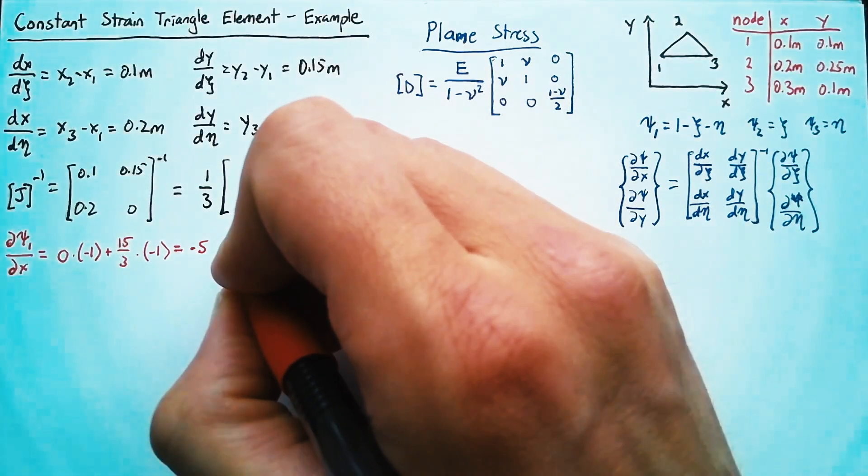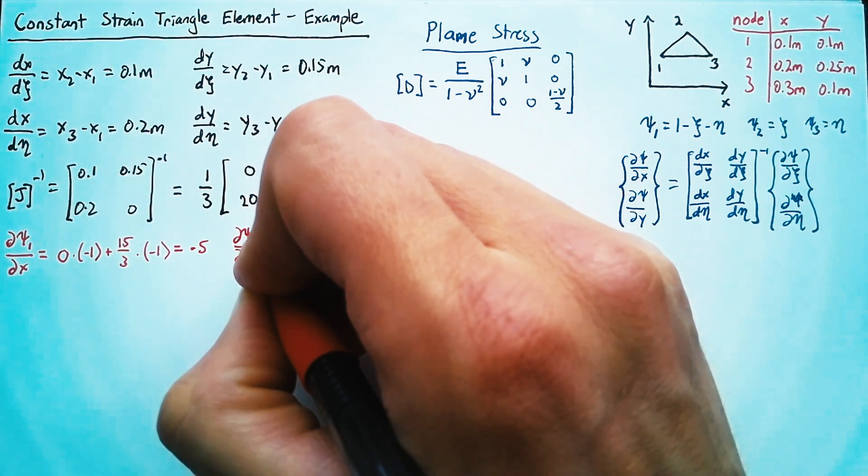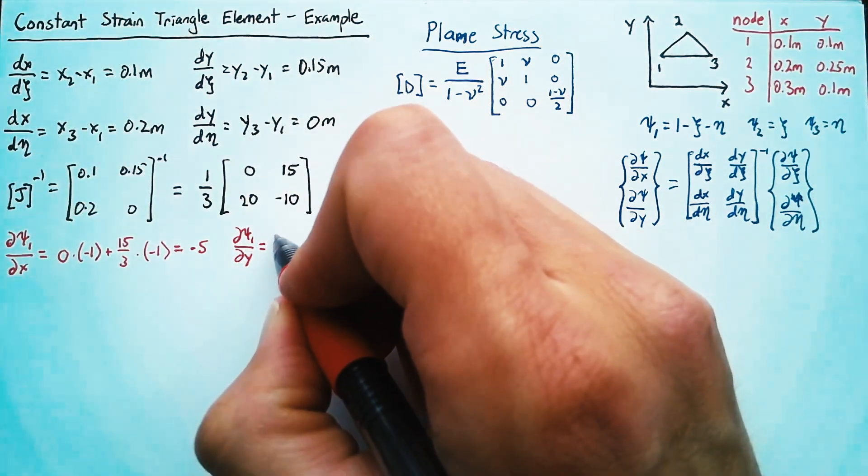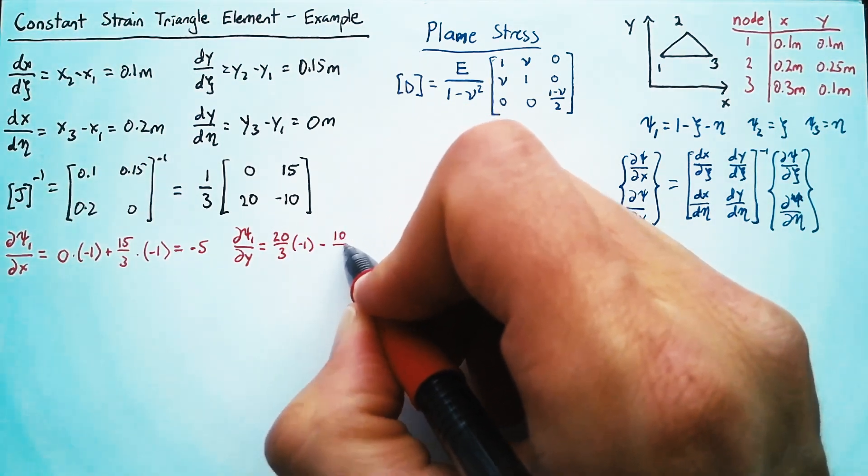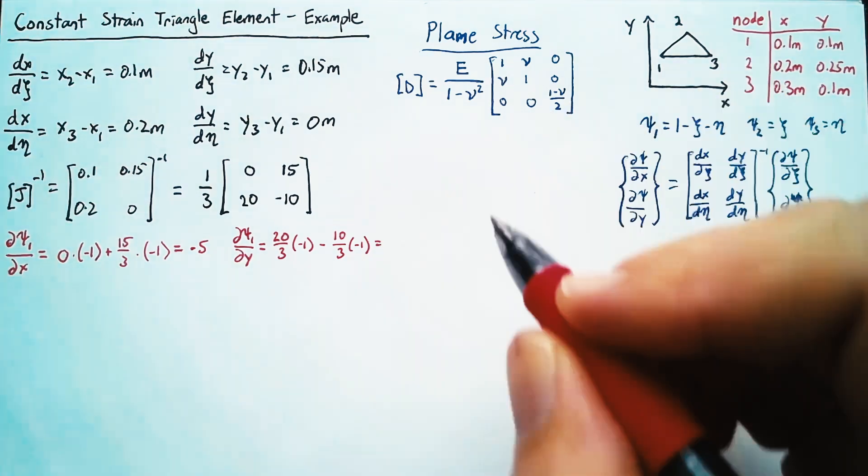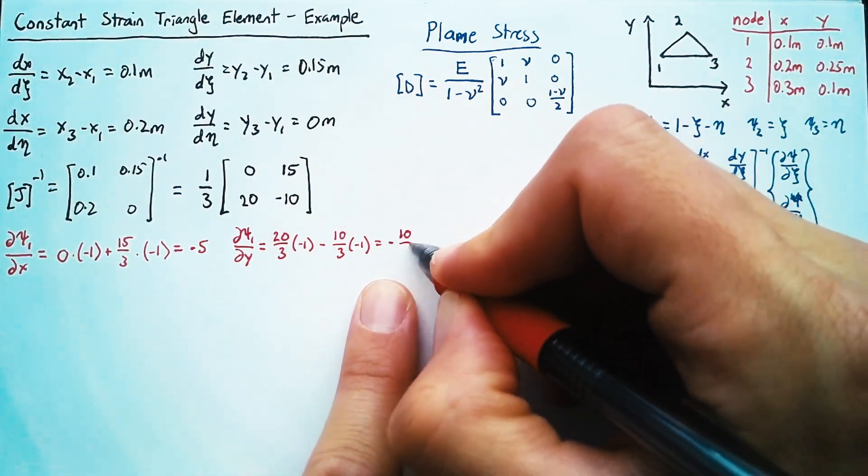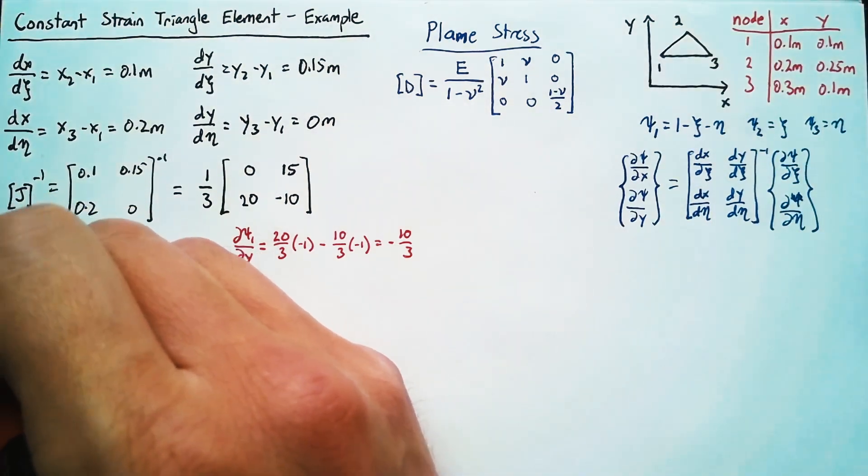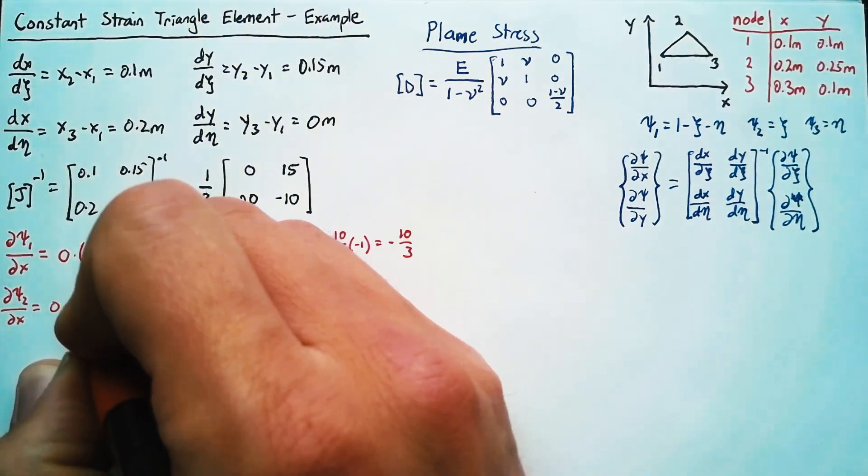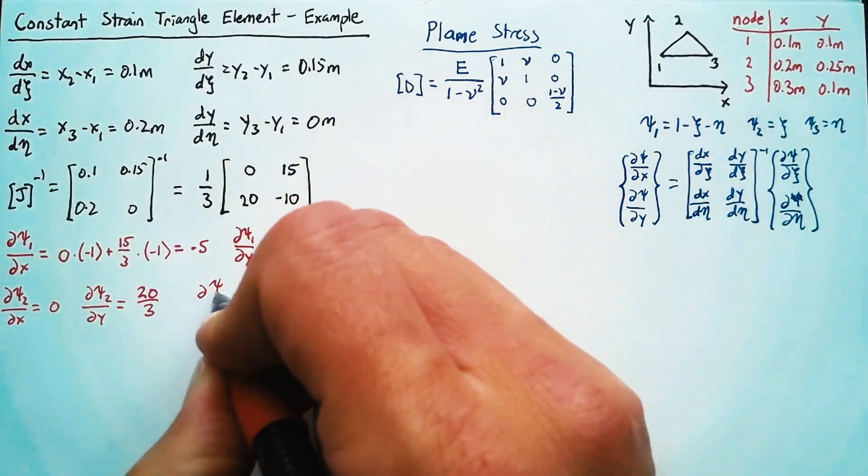Now we can do the same thing for d psi 1 dy. And in this case we get 20 thirds times negative 1 minus 10 thirds times negative 1. And we end up with a negative 10 thirds here. We can do the same thing for psi 2 and psi 3, but I'm just going to write out the results for these.